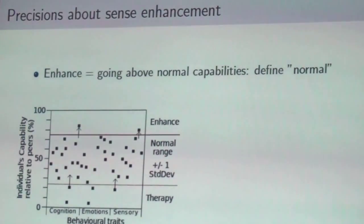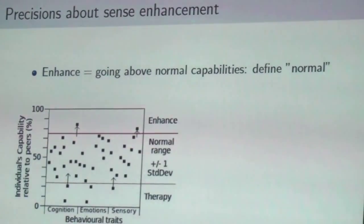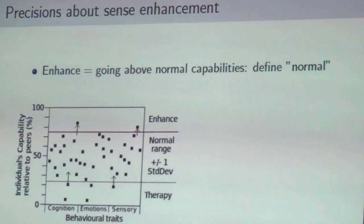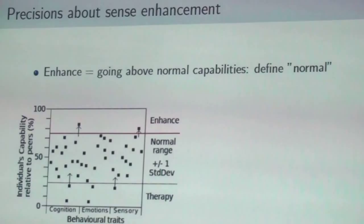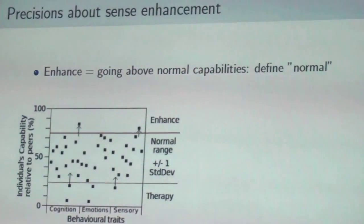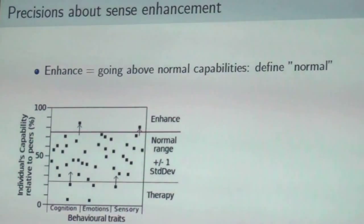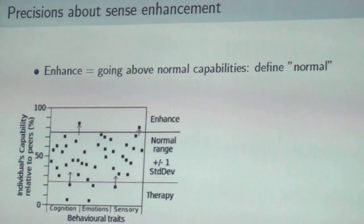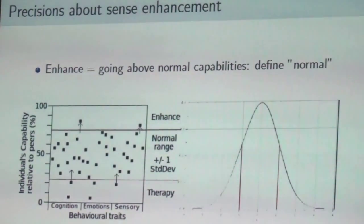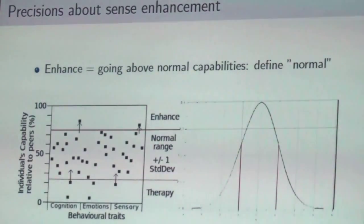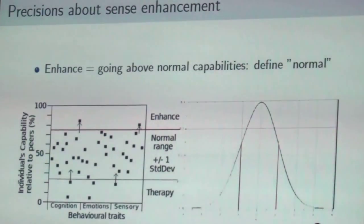There's also the possibility of enhancing the senses to get senses more like an animal. Enhancement means going above normal capabilities. For every individual, we have several traits at various levels across the population — between 0 and 100% of all capabilities. Enhancement means going above plus or minus one standard deviation from the normal. It's not forcibly a superpower — it's going above what we normally can do.